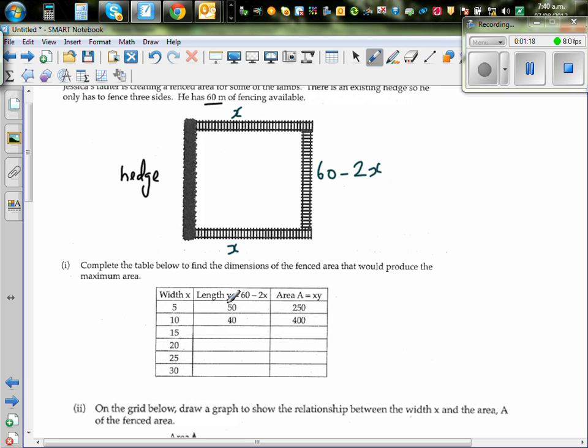This is your length, and if it is 5, your length would be 60 minus 2 times 5. This is your y, which is 60 minus 2x. If it's 15, 60 minus 30 is 30. If it's 20, 60 minus 40 is 20. If it's 25, 60 minus 50 is 10. If it's 30, your length will become 0.